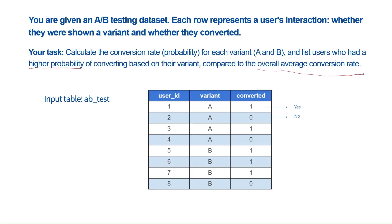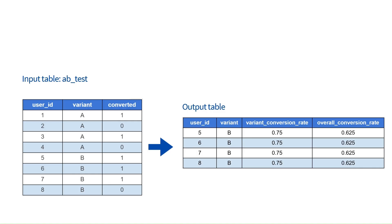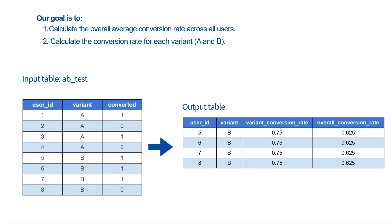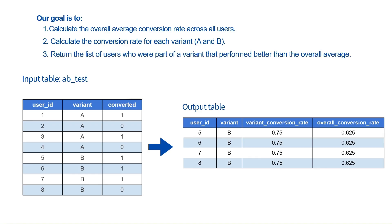Our goal is to return the list of users who are part of a variant that performs better than the overall average. To achieve this, we will first calculate the overall average conversion rate across all users, then calculate the conversion rate for each variant — A and B — and finally return the list of users whose variant performs better than the overall average.